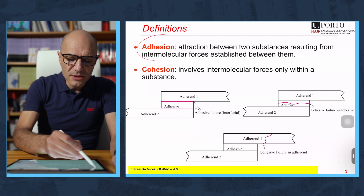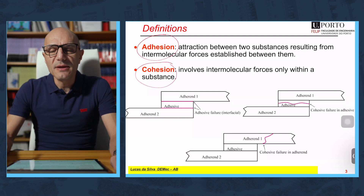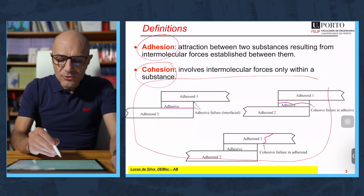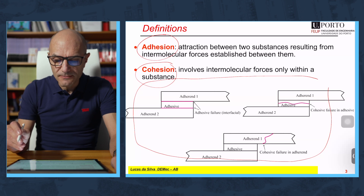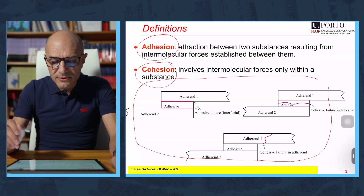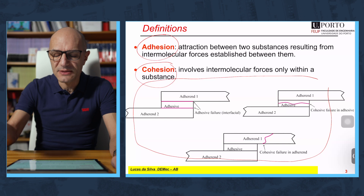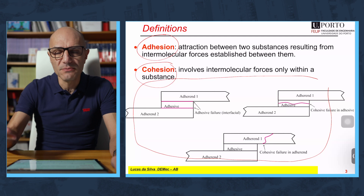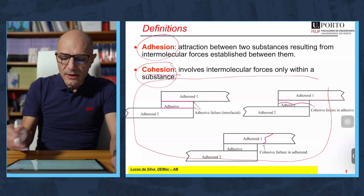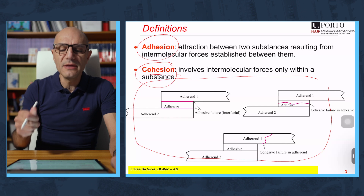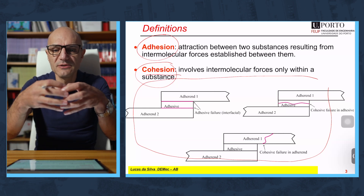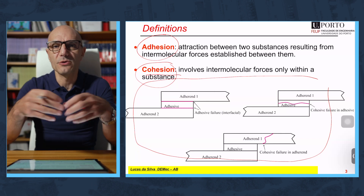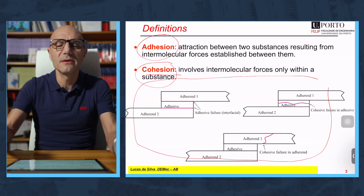Then you have the terms adhesion and cohesion, which are extremely important for classifying the type of failure. Adhesion is related to the attraction between two different substances — for example, between the adhesive and the substrate. Cohesion refers to forces of attraction within the same substance. So within the adhesive, the adhesive can break and we have problems of cohesion inside the adhesive. Or the substrate can break and we have problems of cohesion within the substrate.